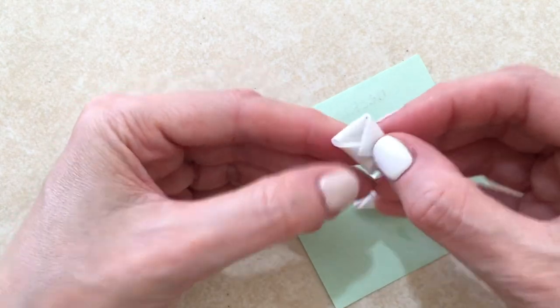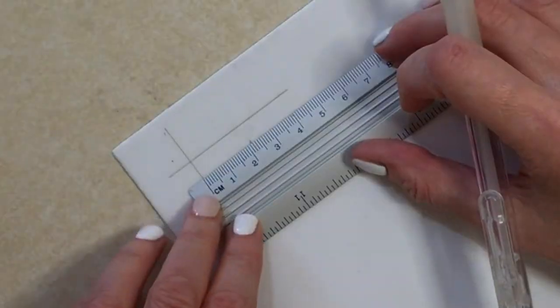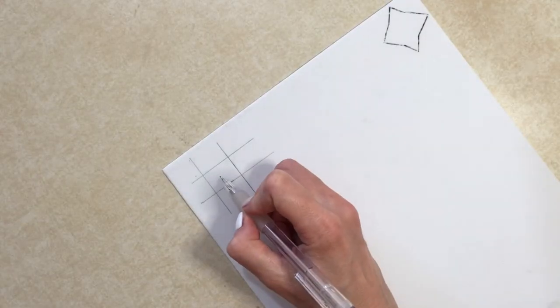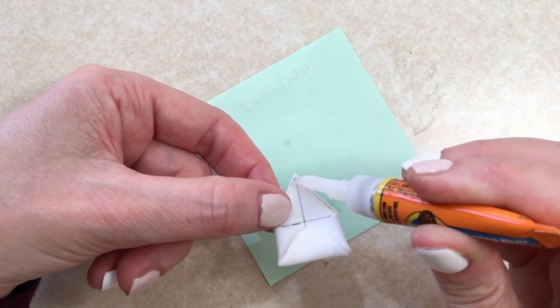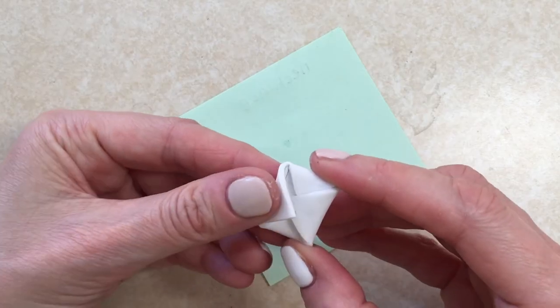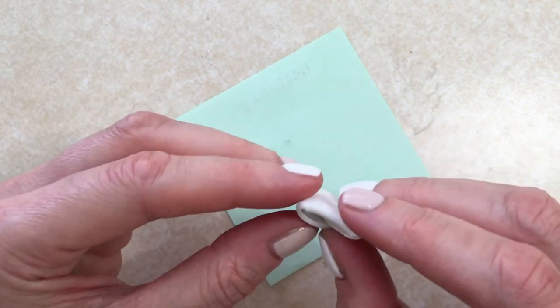For my necklace, which is a bit bigger, it's going to be pretty much the same, and here I'm just sharing with you the sizes that I used, just in case you want to go for the same sizes that I did. One thing that I did differently on the necklace—since my chain is going to go through there, I'm just adding a tiny bit of a dot of super glue, so when I close it there is a gap where my chain can go through.